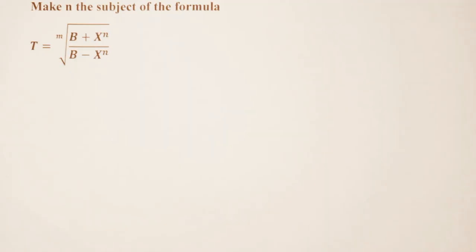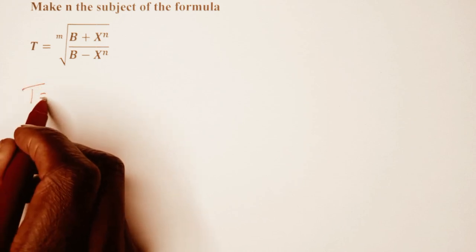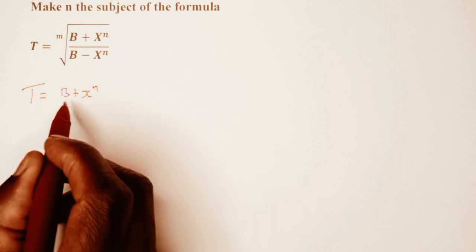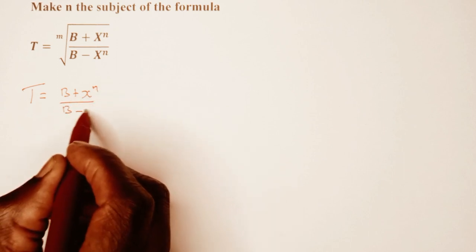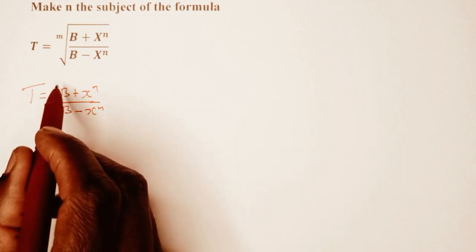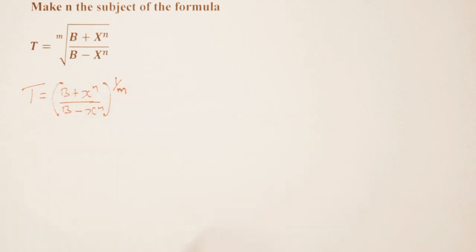Hello and welcome to our class. Today we are dealing with formula and variation. We've been told to make n the subject of the formula, so this question can be written as: t is equal to b plus x raised to n over b minus x raised to n, then raised to the power 1 over m. That is how you write the question.